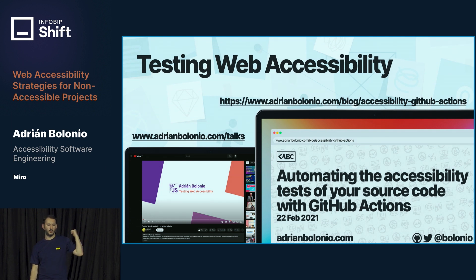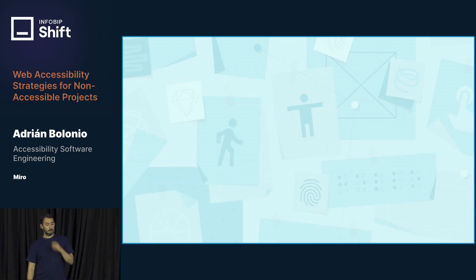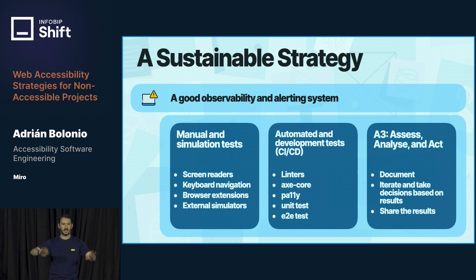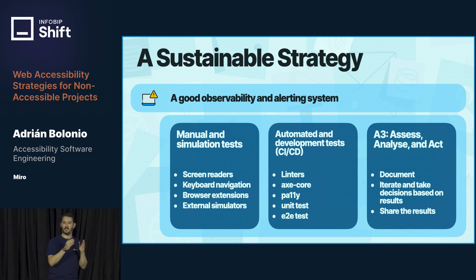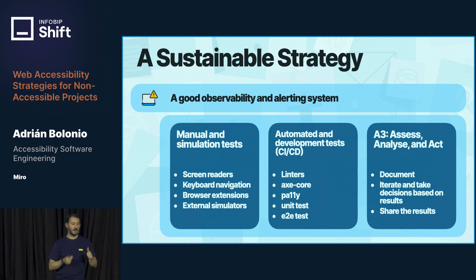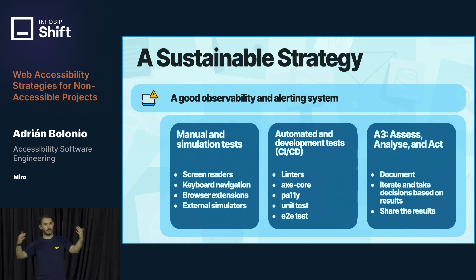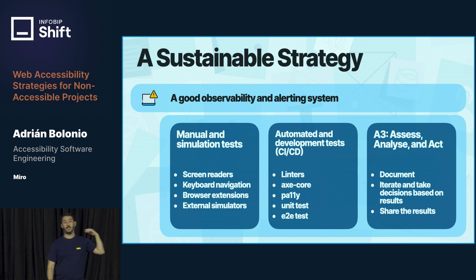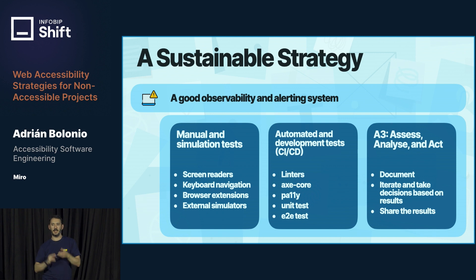I talked about testing web accessibility in a previous talk and wrote about it on my blog, so feel free to take a look. Also: the three A's. We found errors — that's good. But we need to study them: assess them, analyze them, and act on them. Always make decisions based on results. You want to know how many images on your website have alt text, but also analyze the quality of those descriptions. Based on results, decide what to improve. Document it — for someone coming later, some work is already done, which is very beneficial. Share the results in the accessibility channel or the front-end guild, give a talk about the testing phase and the tools in your CI/CD, and document it.